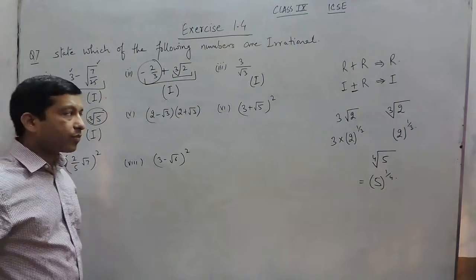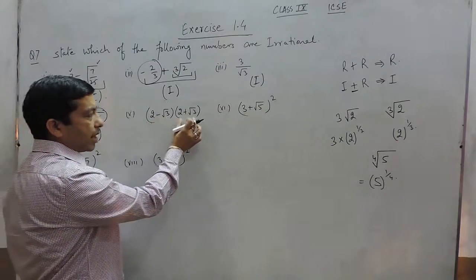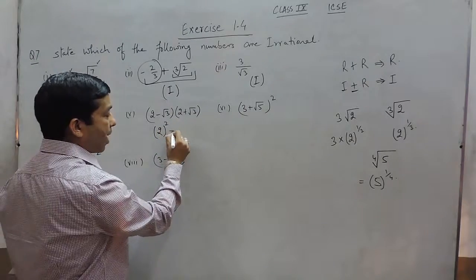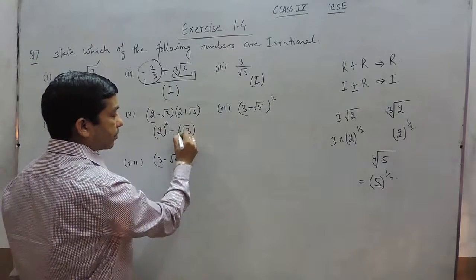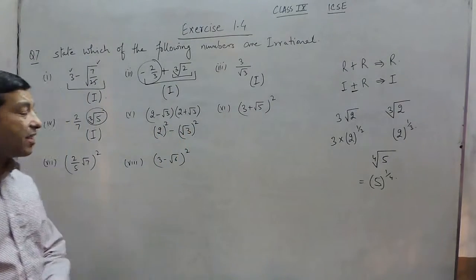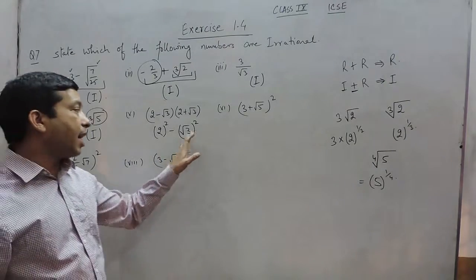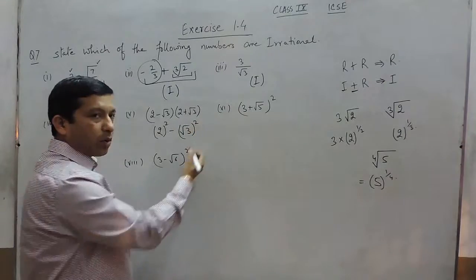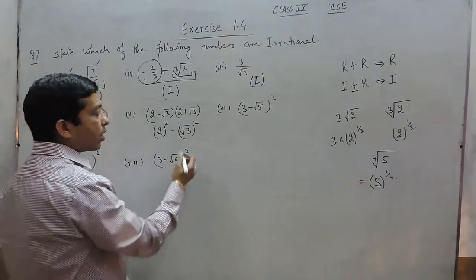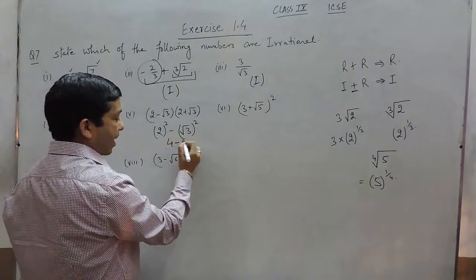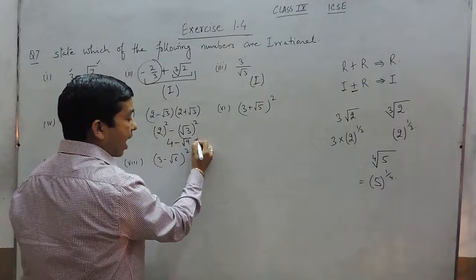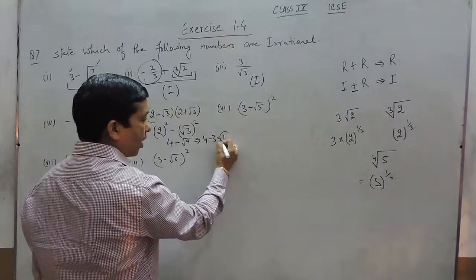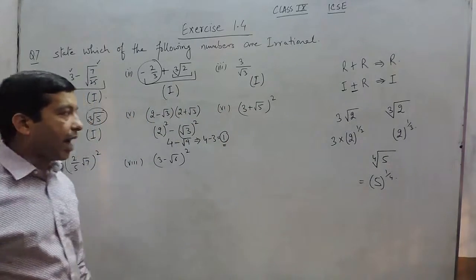Then we solve this. It is (x - y)(x + y), which can be written as x² - y². One thing is very important: when there is a square of any square root, so √3 × √3 can be written as √9. So this becomes 4 - √9. √9 is a perfect square, so it is 4 - 3, which equals 1, and 1 is definitely a rational number.